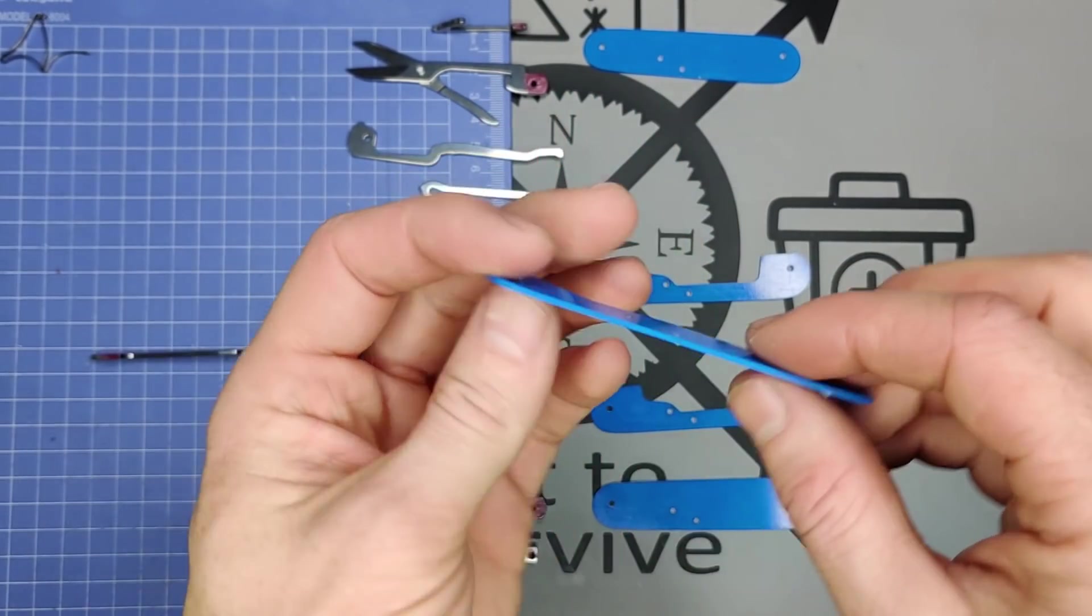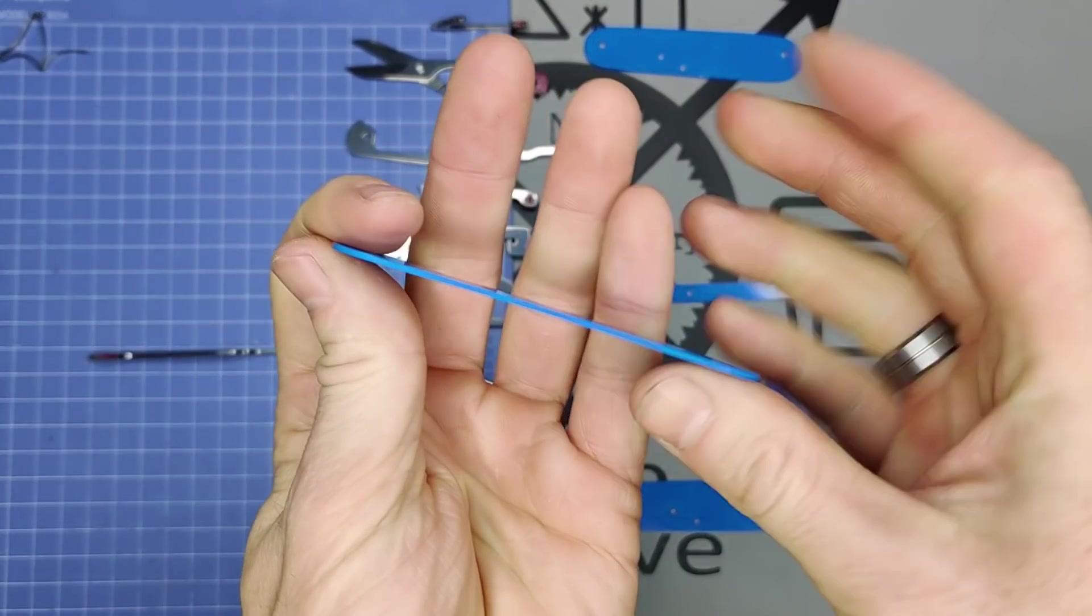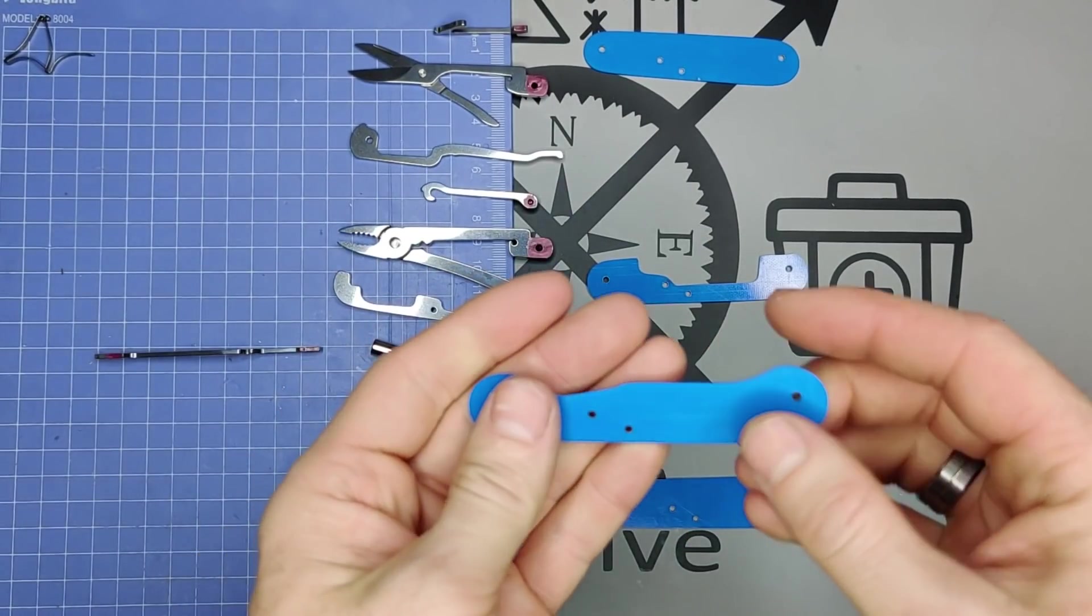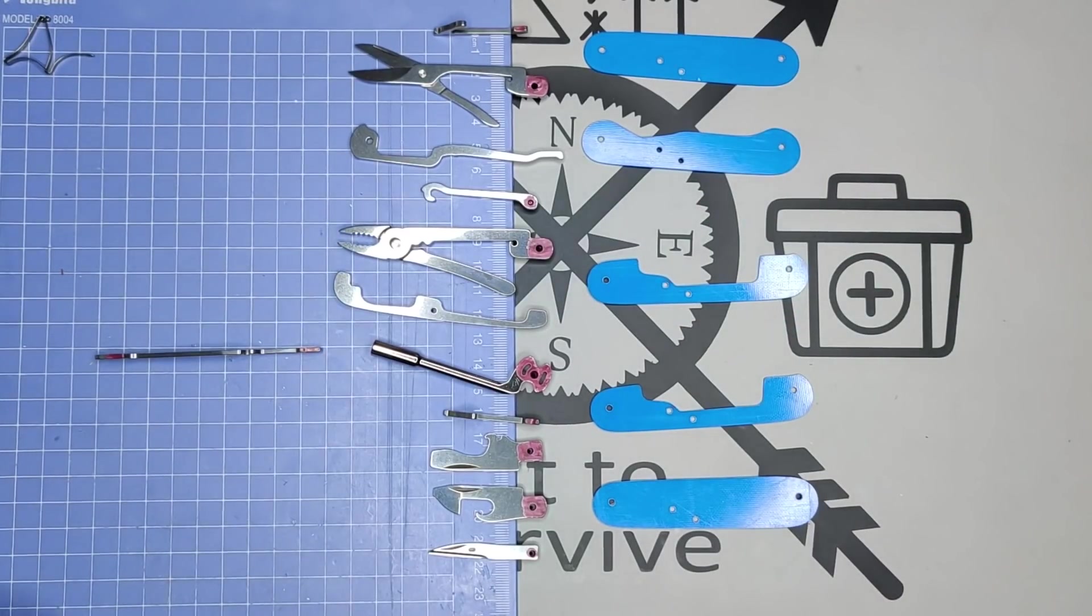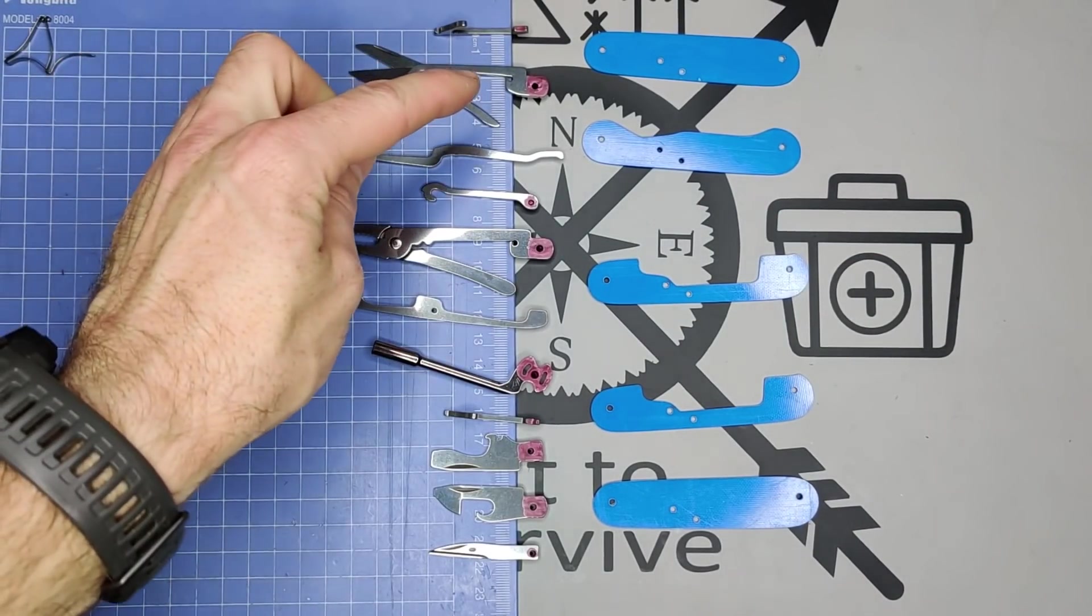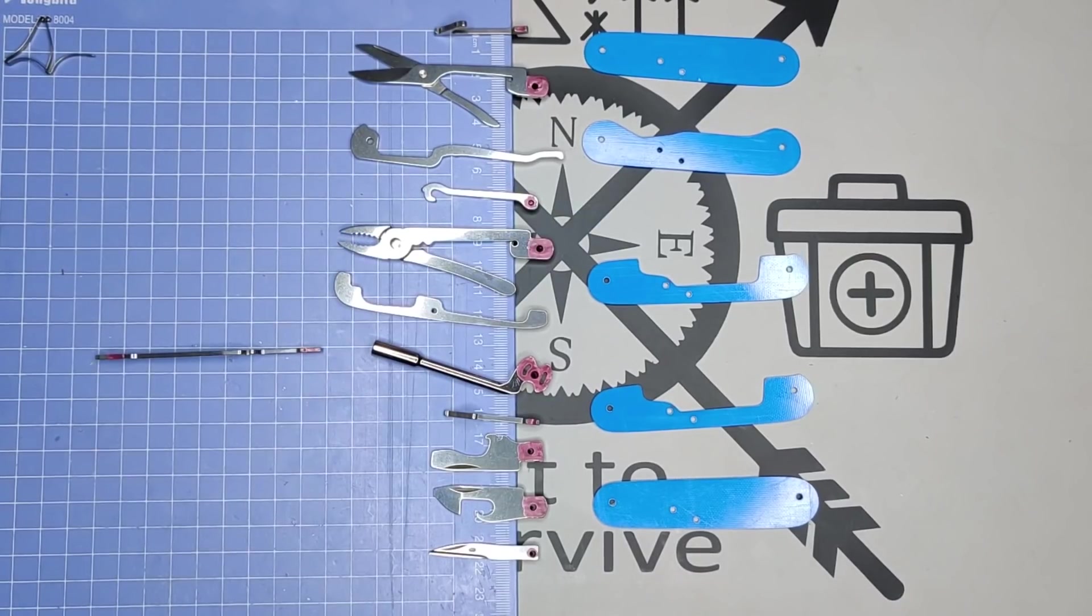I guess that'd be the only real positive is simply that the G10 springs back into shape. So other than that, it just comes down to the style. All right, so next we're going to put strings. We're going to hang all these tools from strings so we can submerge it into the acid.